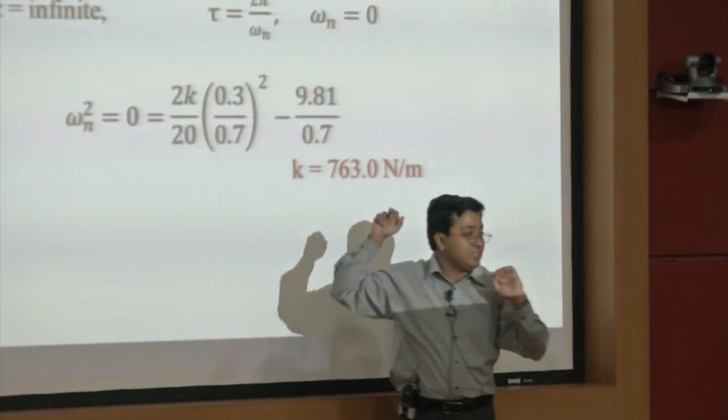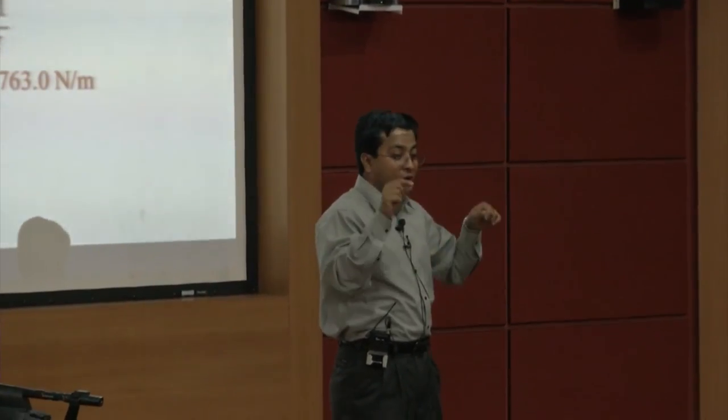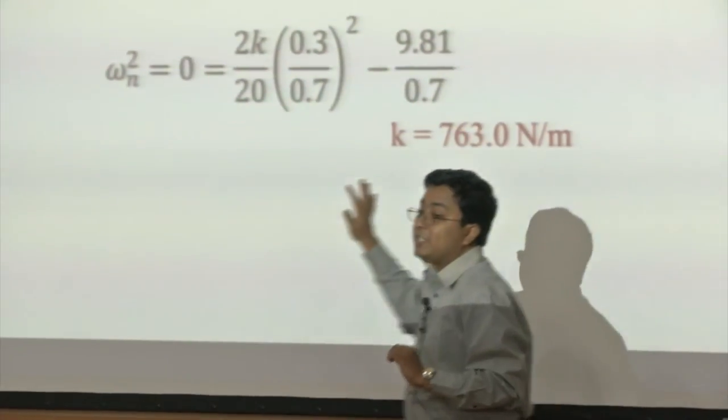Using the potential energy approach with K equal to this critical value, we can show the system is unstable for K less than this threshold. omega_n = 0 is a static condition because time period is infinity. For K less than this critical value, the system is unstable, which can be verified by potential energy analysis.